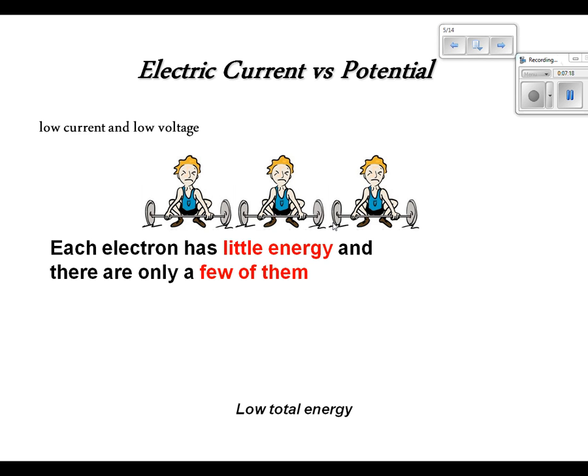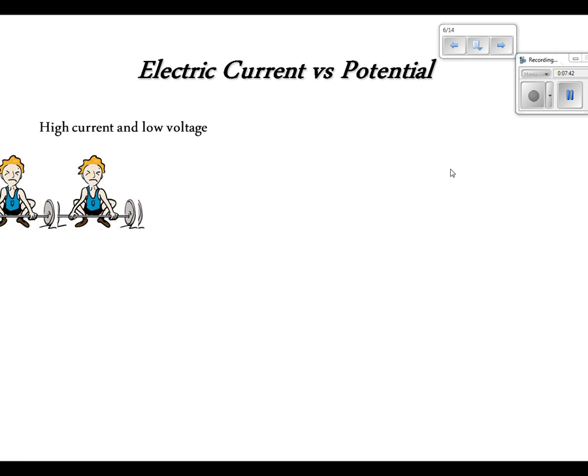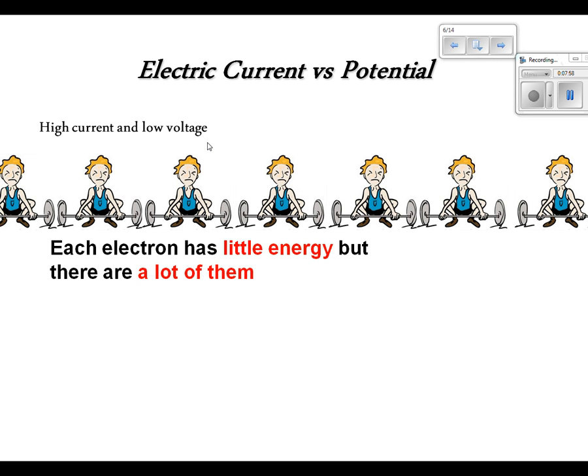Having seen that, I'm going to guess that you can look at the next one and kind of figure out what's going to happen there. What changed in the next picture? More of them. So, what's going to change? Is it going to be current or voltage? It's current. High current, low voltage. You've got way more of them, way more minions. They still aren't very strong. What's our overall energy? Each electron has little energy, but there's lots of them. So, you've got moderate or medium total energy.